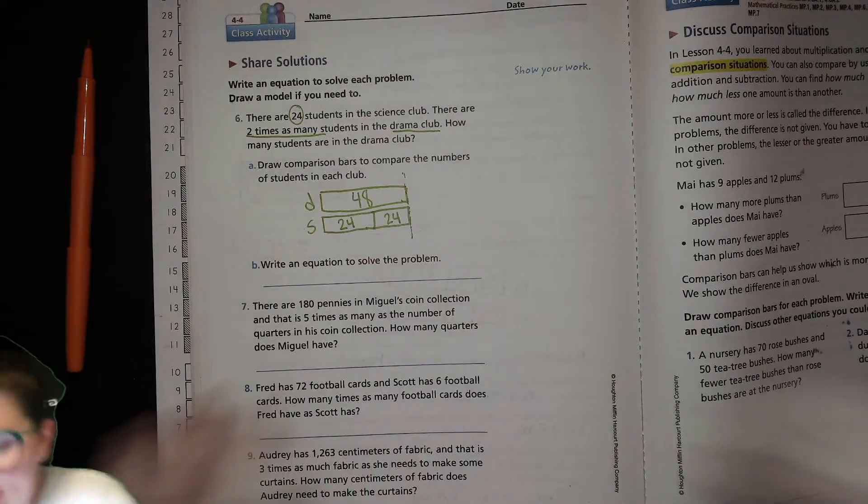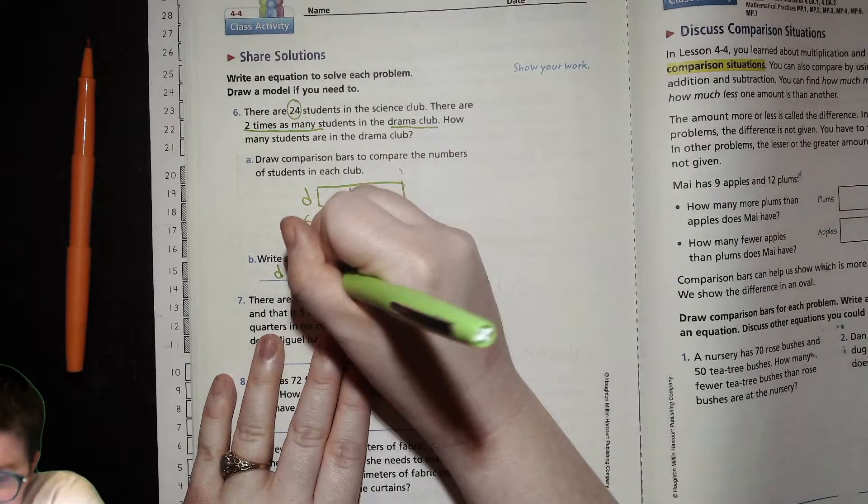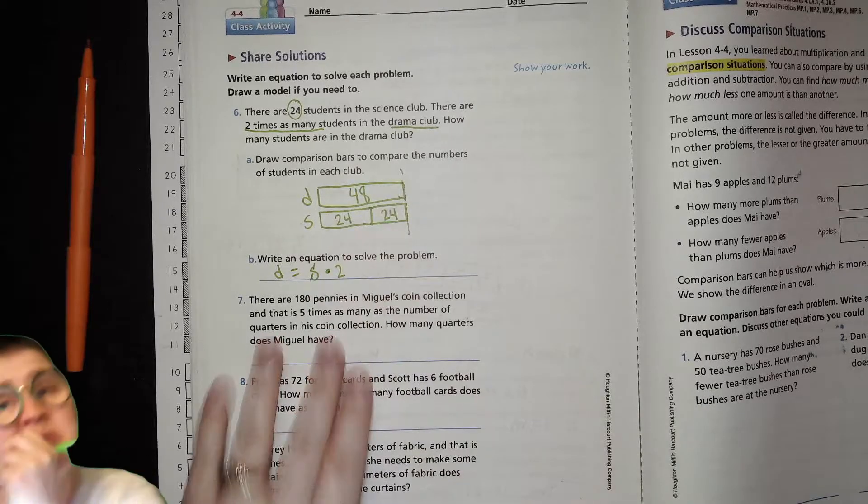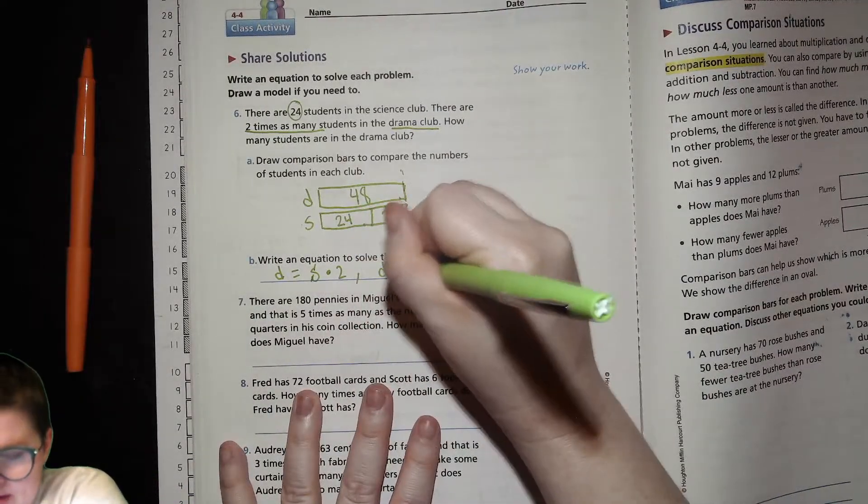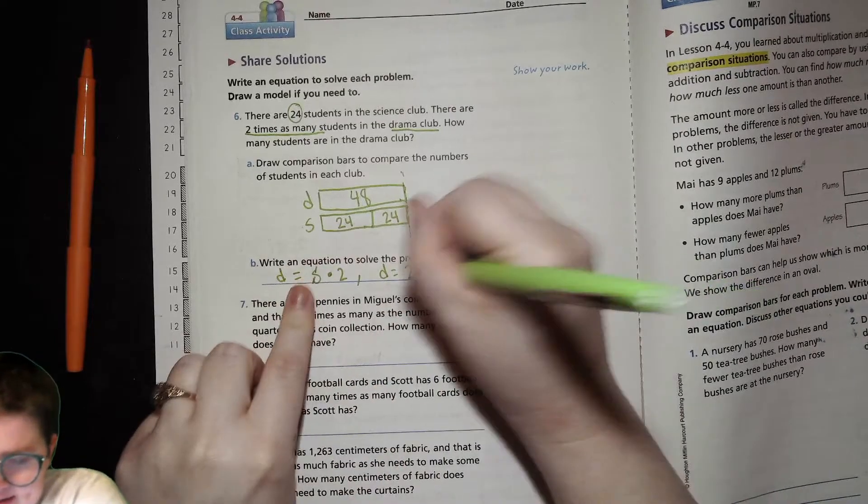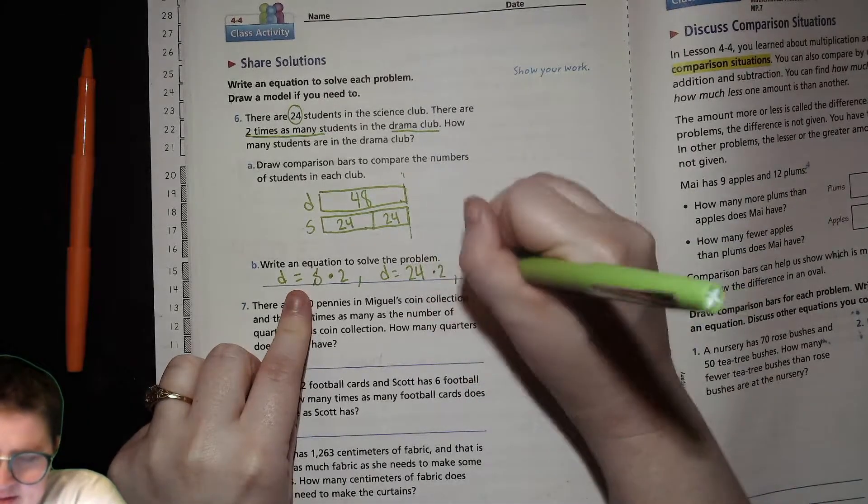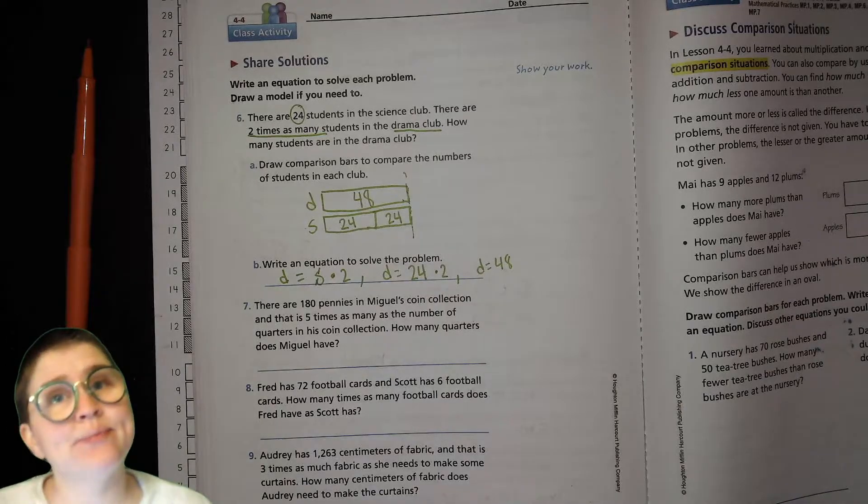So write an equation. Drama club equals science club times 2. Or you could say drama club equals plugging in the science around 24 times 2. So then D.